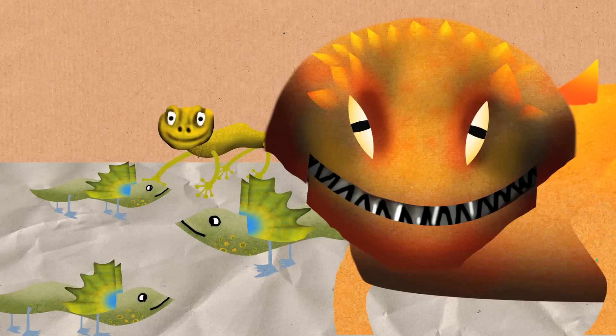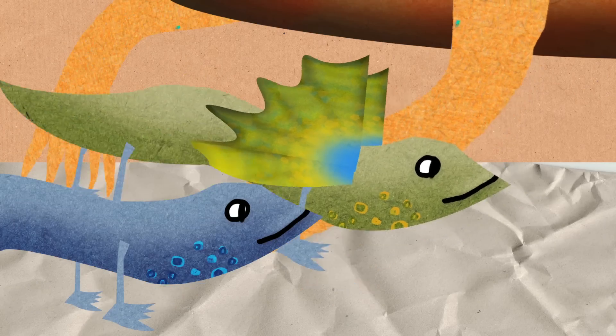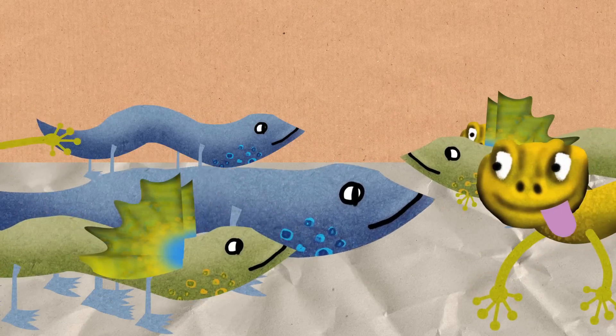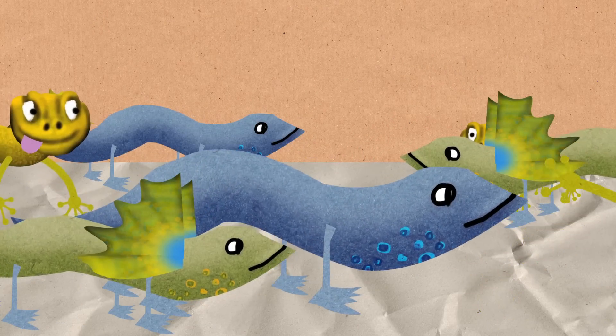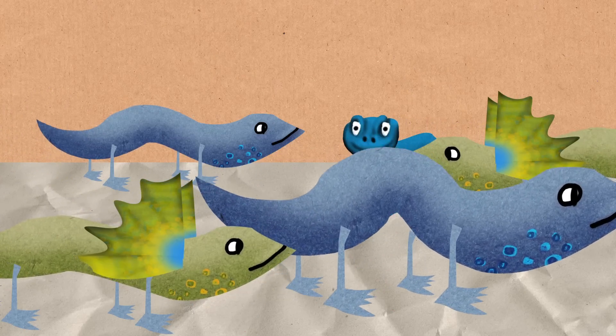So the orange loses to yellow but beats blue. Then the blue lizards who lose to orange, the yellow lizard has no way of attacking their females because they're really closely guarded. And actually a yellow lizard will turn into a blue lizard given half the chance.